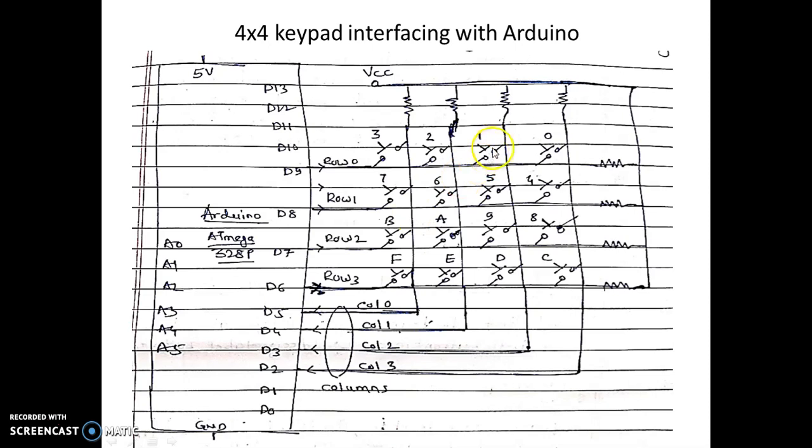So this is 4x4 keypad, it is connected with Arduino in terms of row pins and column pins. So D9, D8, D7, D6 are the row pins and D5, D4, D3, D2 are the column pins.